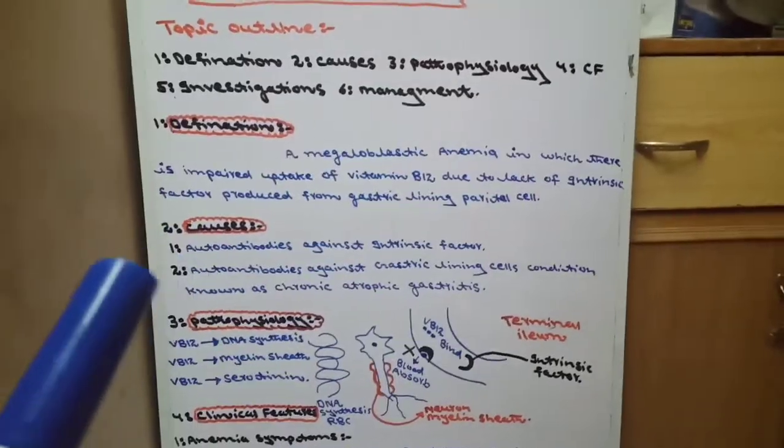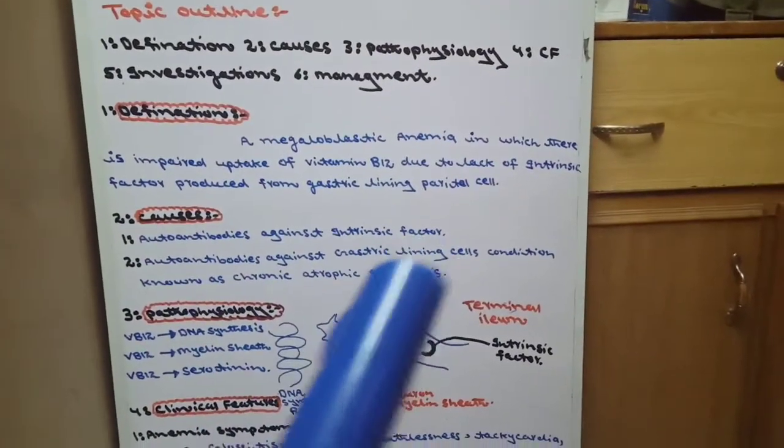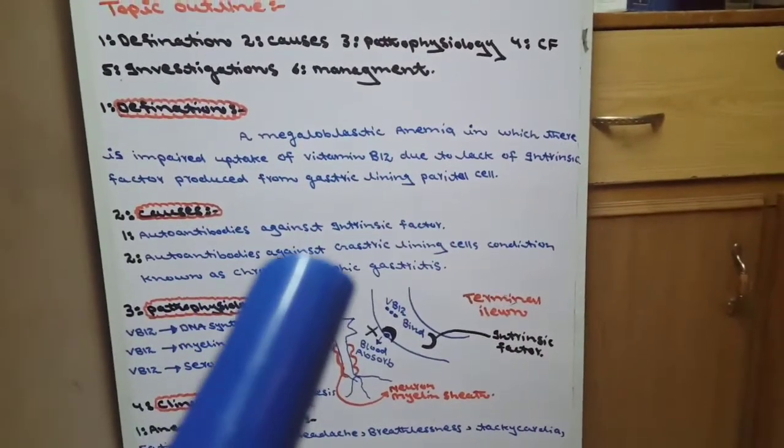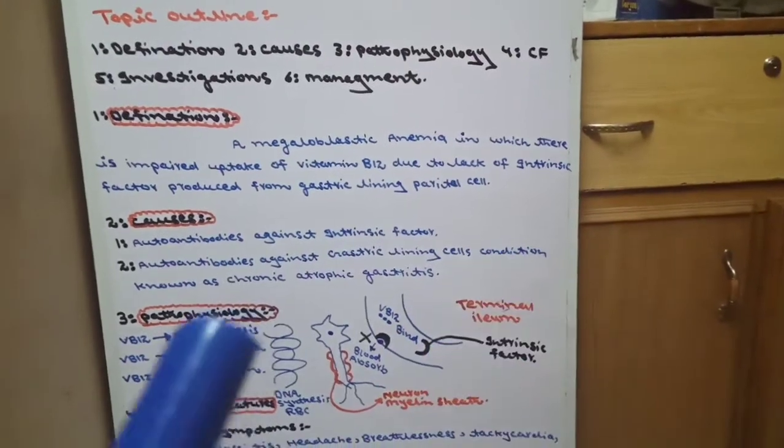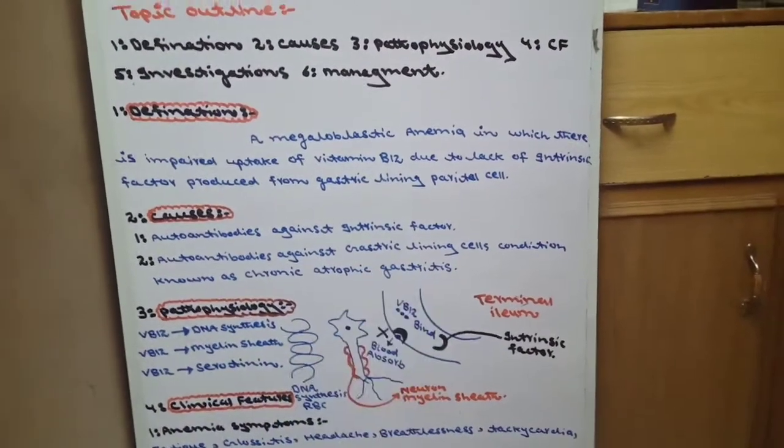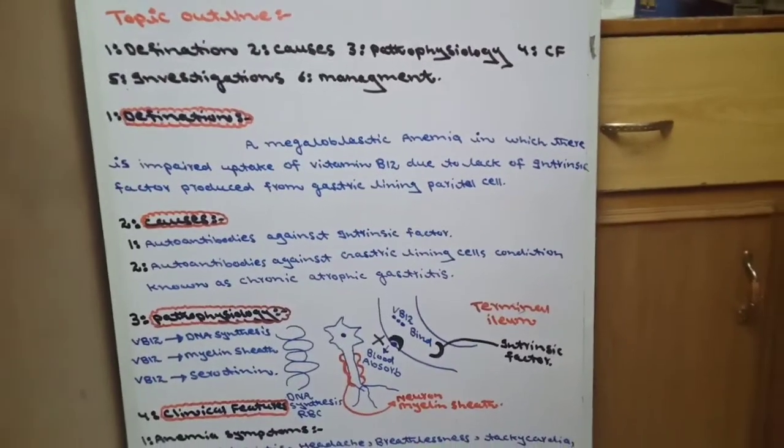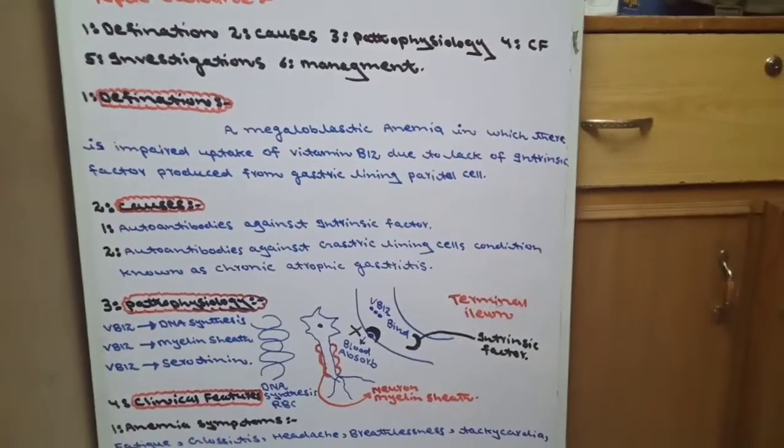The causes are: first, autoantibodies against intrinsic factor, or second, autoantibodies against gastric lining cells. This condition is known as chronic atrophic gastritis. These are the two causes.